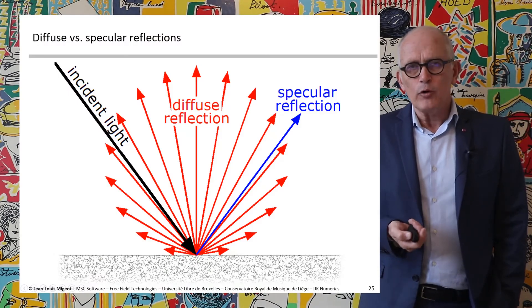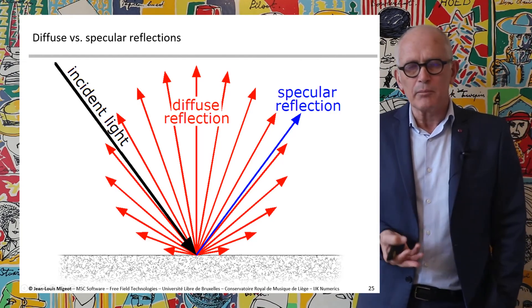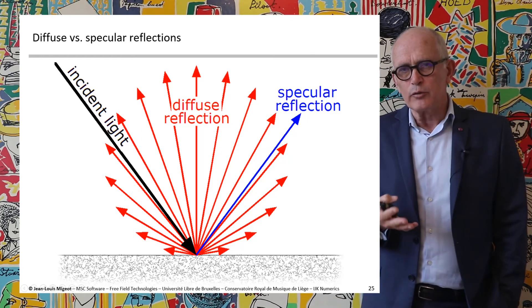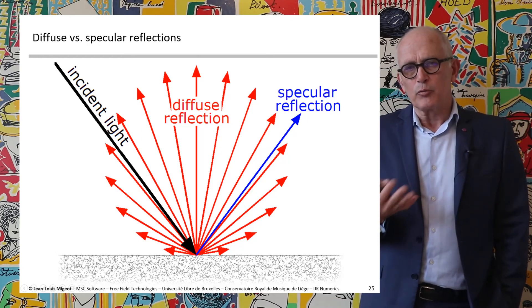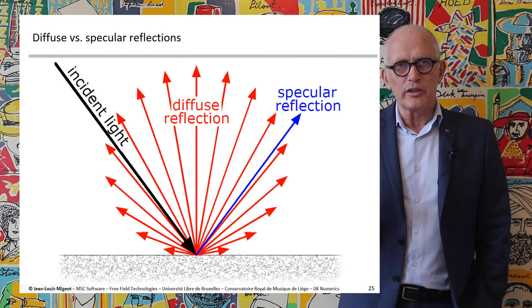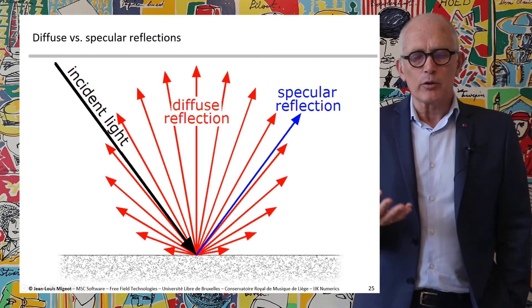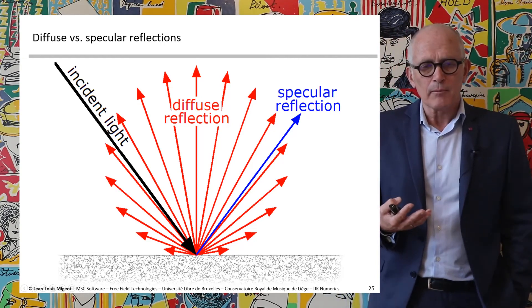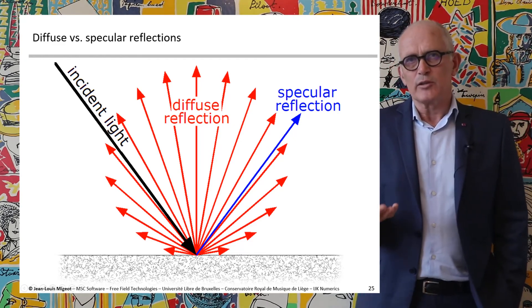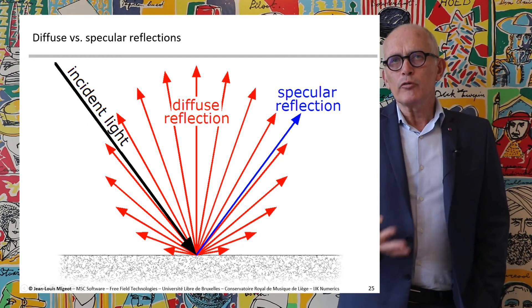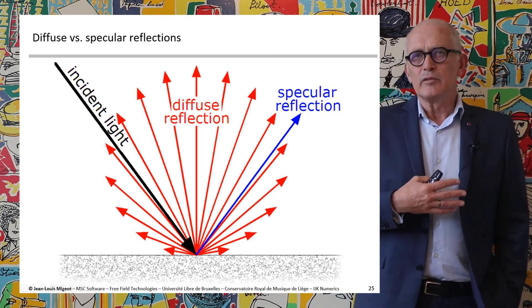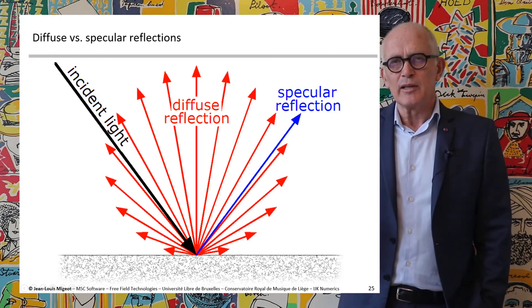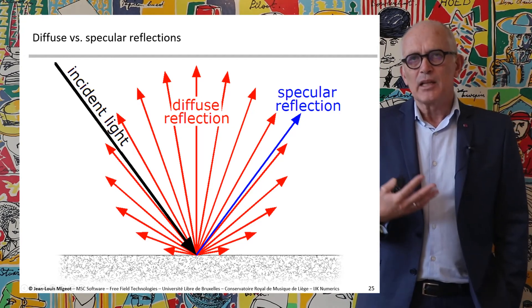The last concept to introduce is specular versus diffuse reflection. An incident wave impinging the surface with a certain angle is reflected according to Descartes' law — this is called specular reflection, from the Latin speculum meaning mirror — a perfect reflection in a single direction. But in practice, surface irregularities mean that while most energy is reflected according to Descartes' law, a certain amount is redistributed in many directions. This is called diffuse reflection.